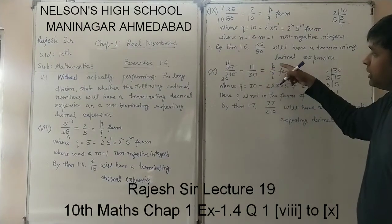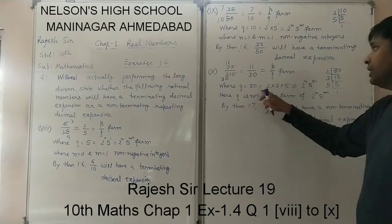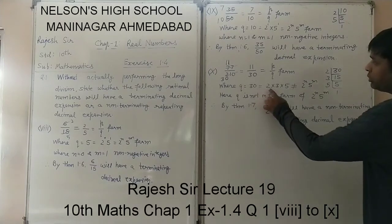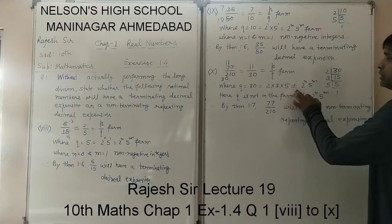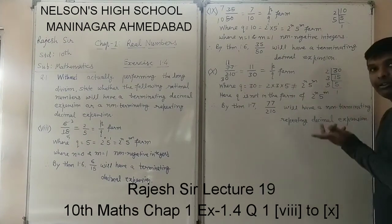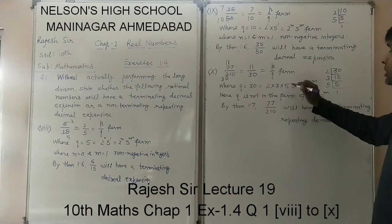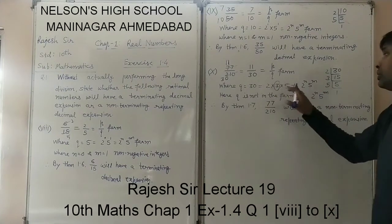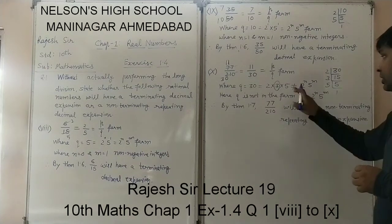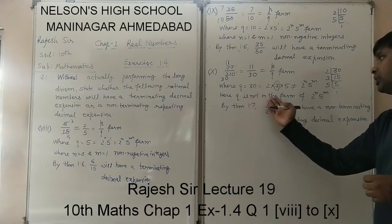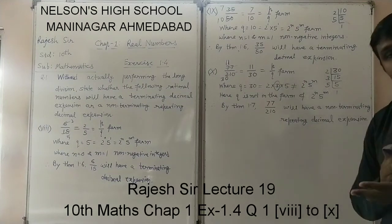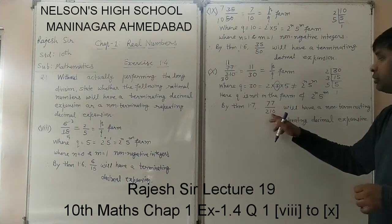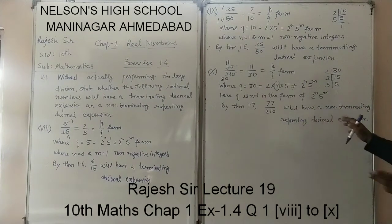Now consider 11 upon 30 in P upon Q form, where Q is 30. The prime factorization of 30 is 2 × 3 × 5, so we can write 30 as 2 into 3 into 5. This is not equal to the form 2 raised to n times 5 raised to m, because 3 is an extra prime factor disturbing this form. Therefore Q is not in the form 2 raised to n times 5 raised to m. By Theorem 1.7, the given fraction 77 upon 210 will have a non-terminating repeating decimal expansion.